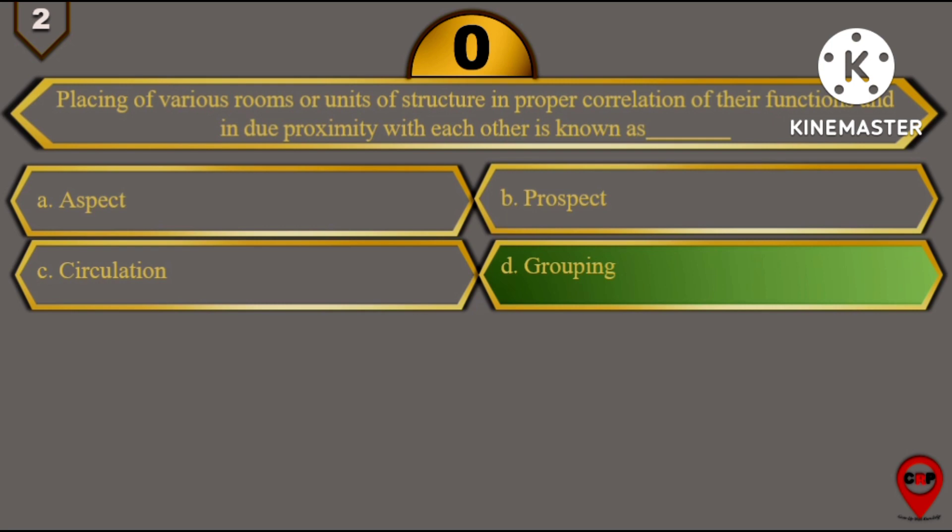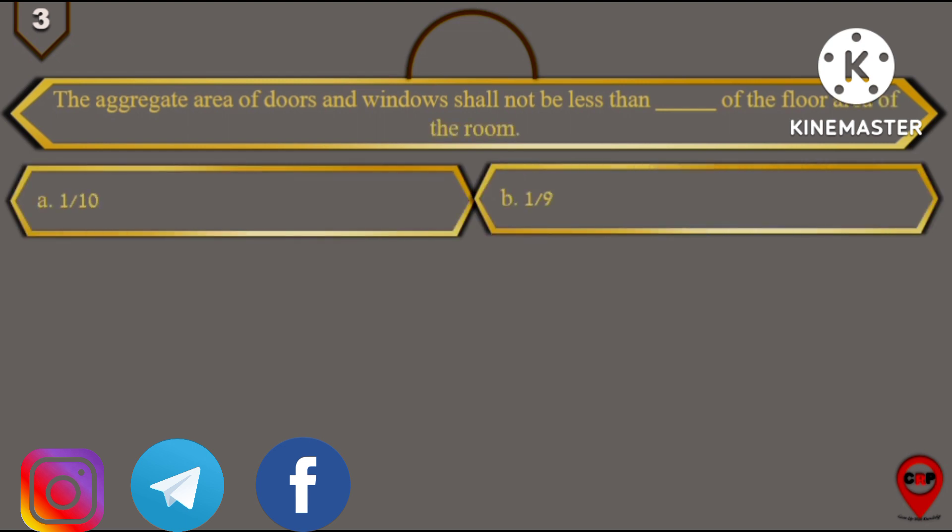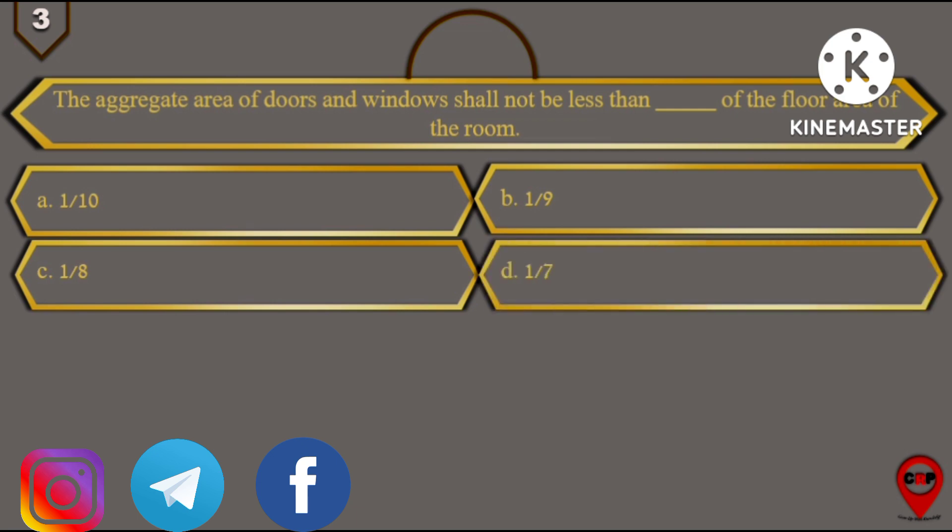So our next question, question number 3: The aggregate area of doors and windows shall not be less than blank of the floor area of the room. Options are: 1/10, 1/9, 1/8, and option D is 1/7.